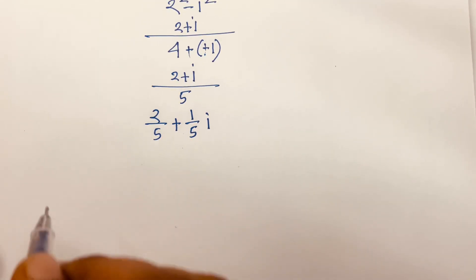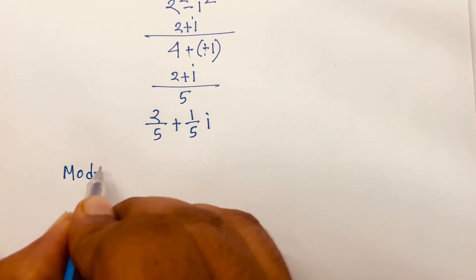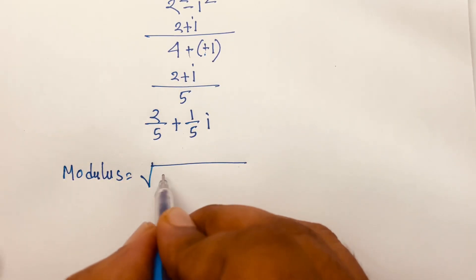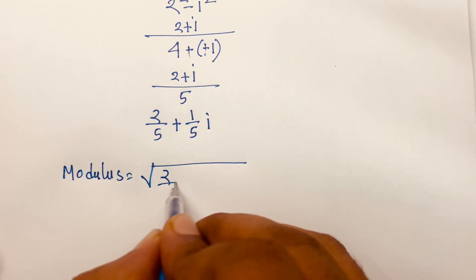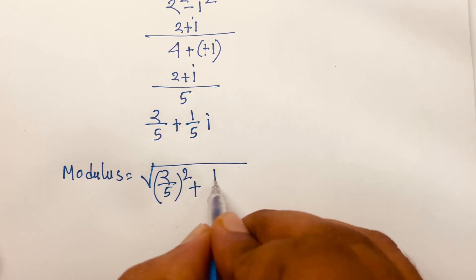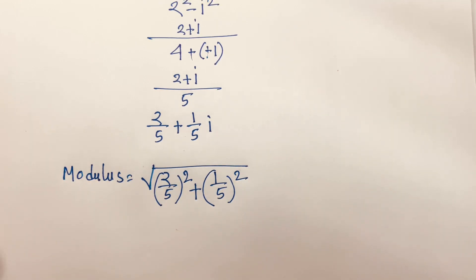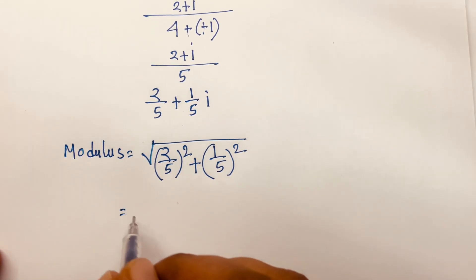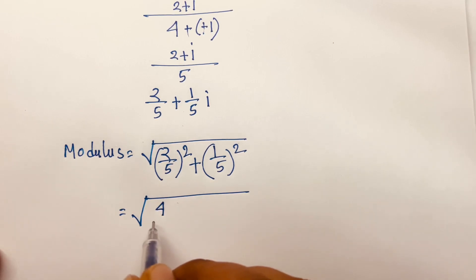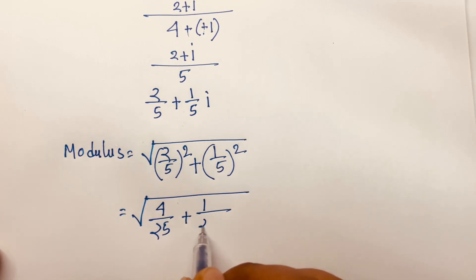Now we'll find the modulus. The modulus is the square root of x squared plus y squared. Here x is 2 over 5 and y is 1 over 5, so it is the square root of (2 over 5) squared plus (1 over 5) squared, which gives square root of (4 over 25) plus (1 over 25).